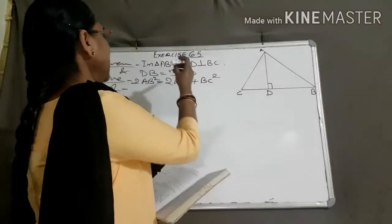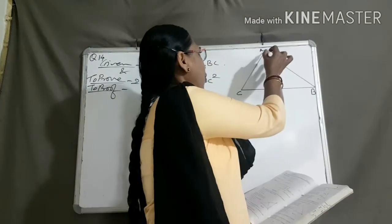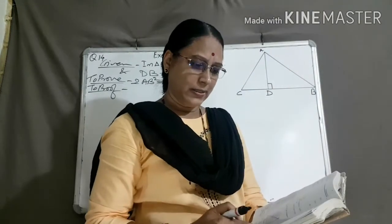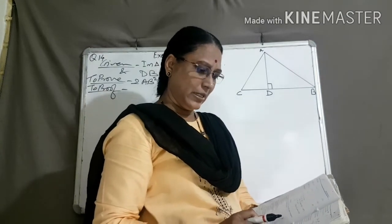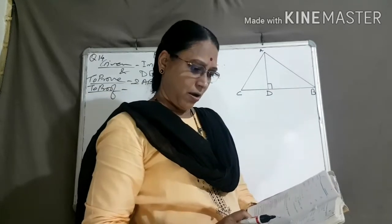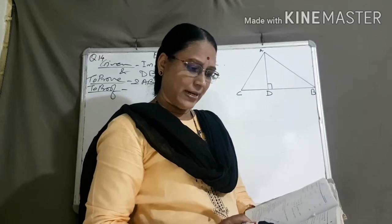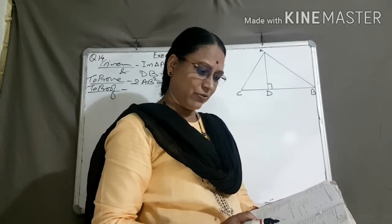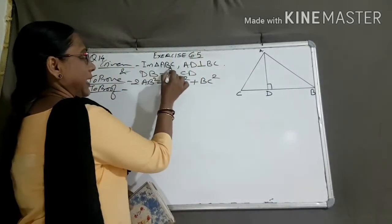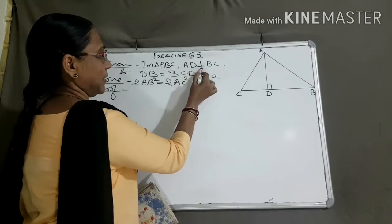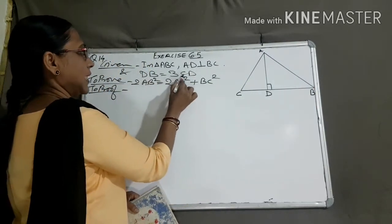Hello students, exercise 6.5, question number 14. The perpendicular from A on side BC of a triangle ABC intersects BC at D, such that DB equals thrice CD. Prove that twice AB square equals twice AC square plus BC square. We have given in triangle ABC, AD perpendicular to BC and DB equal to thrice CD.